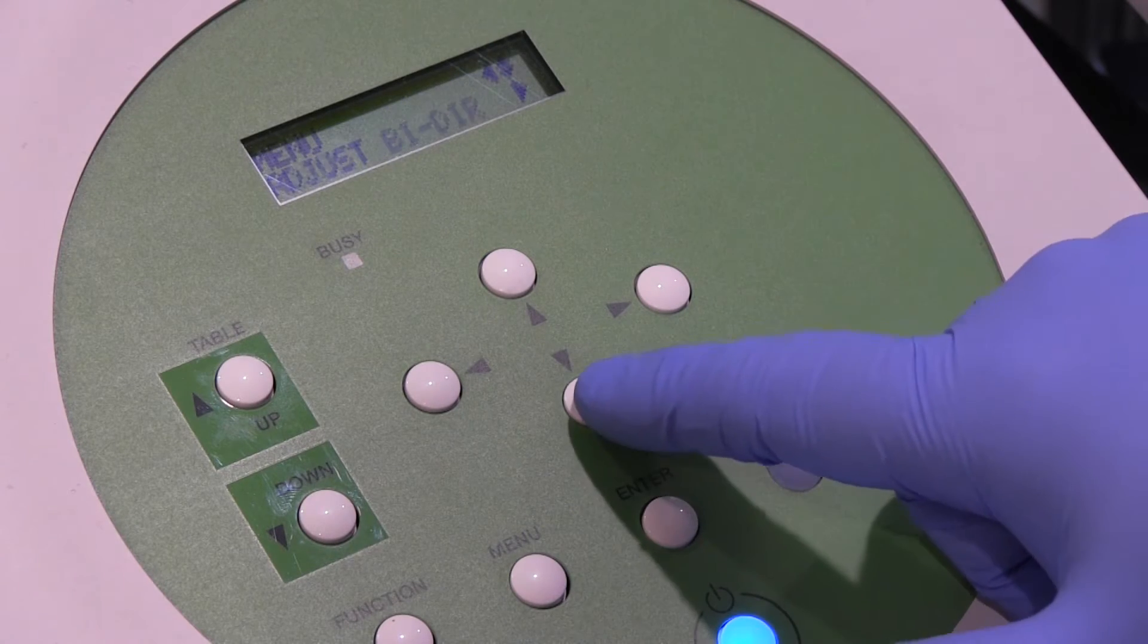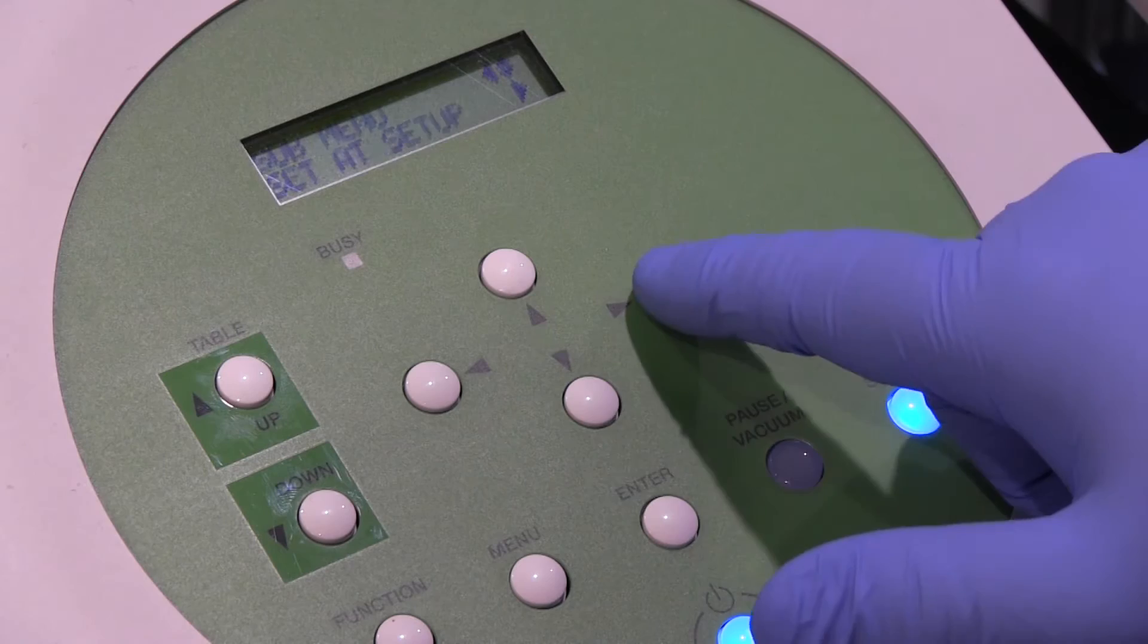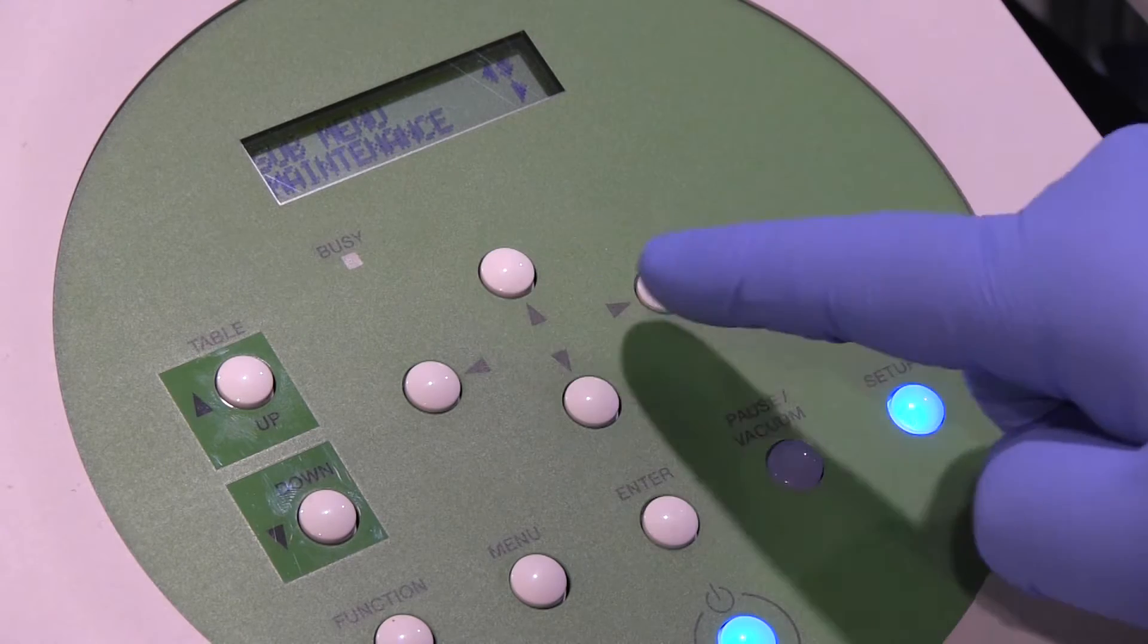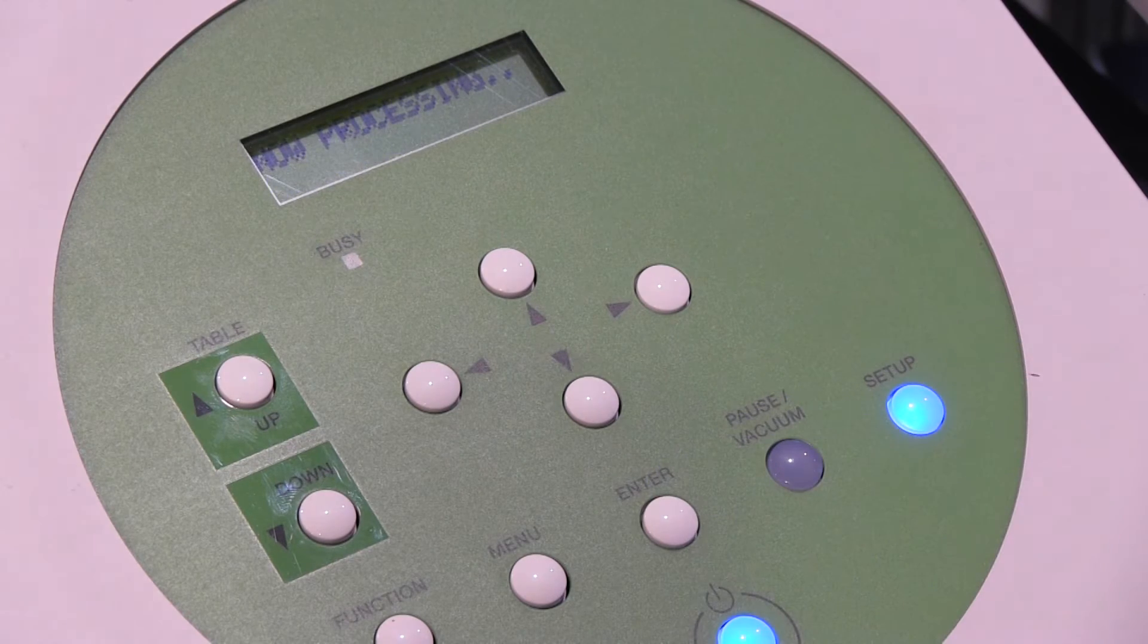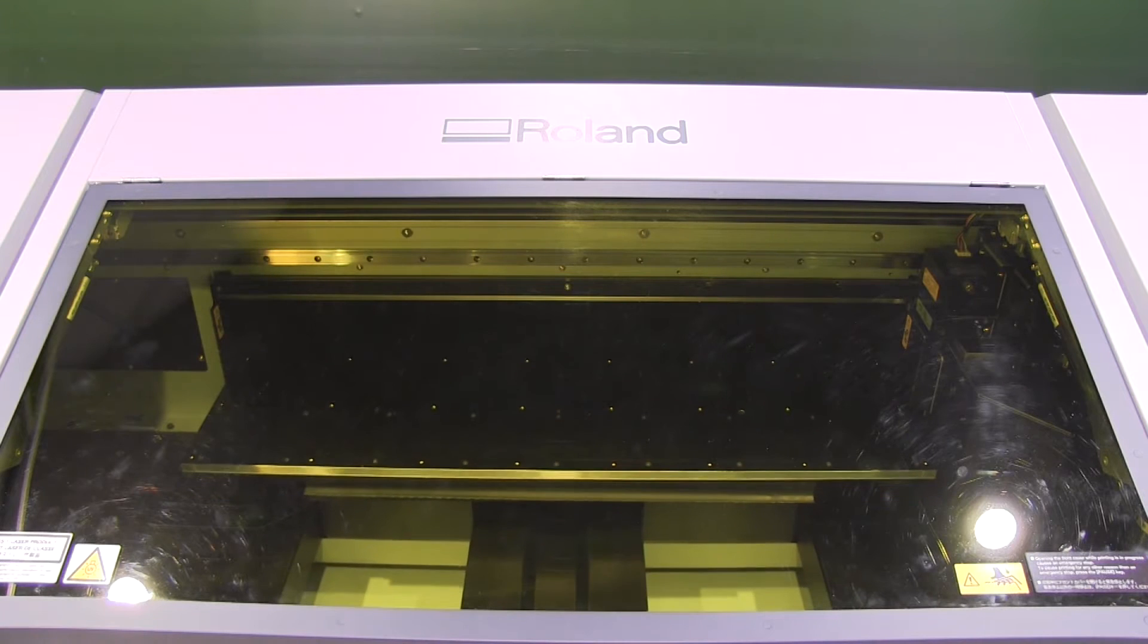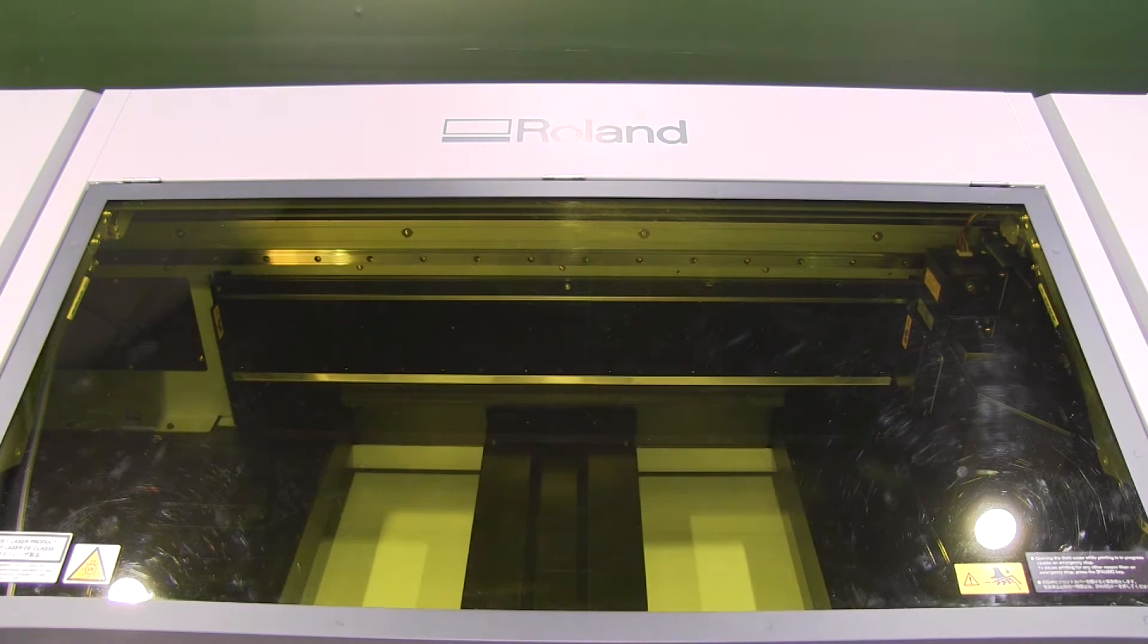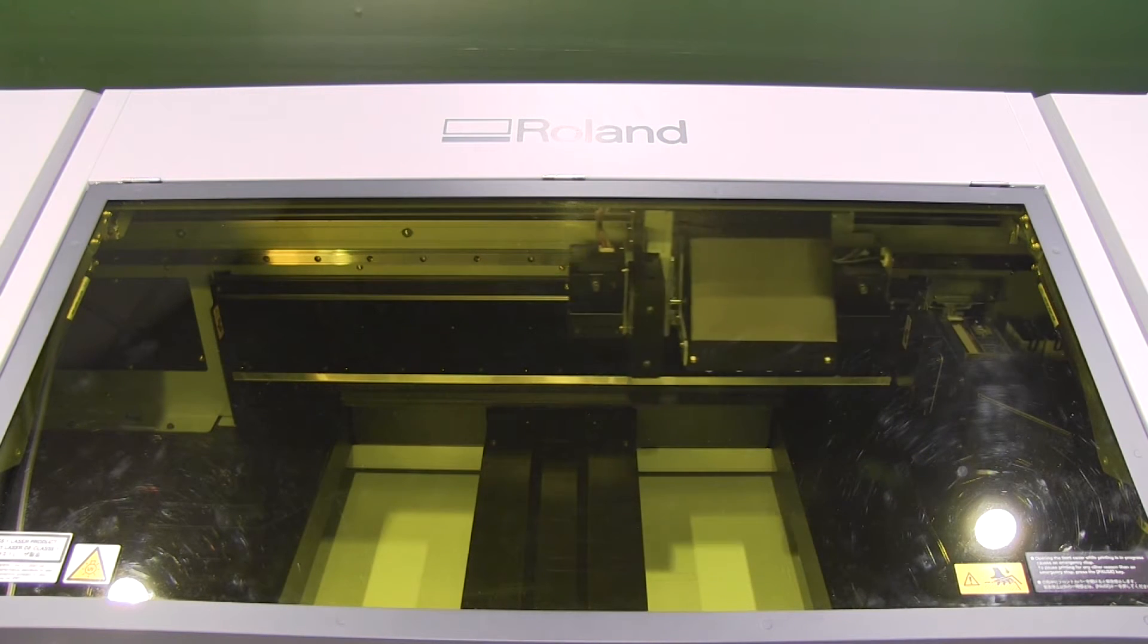On the menu panel navigate down to the sub menu and then into the maintenance menu. When you find the cleaning option press enter. The table within the machine will then go towards the rear and the print head will travel to the left in order to get better access for cleaning.